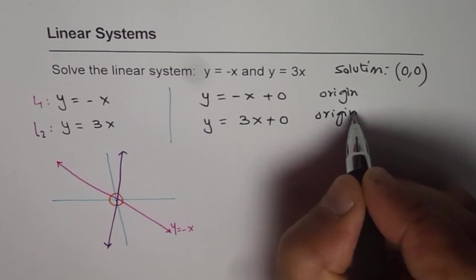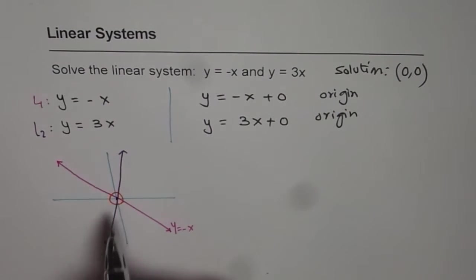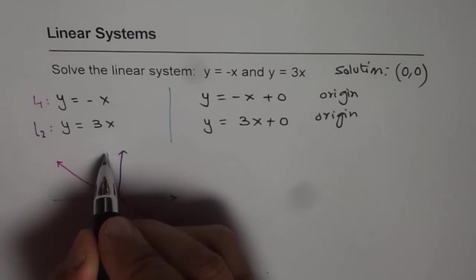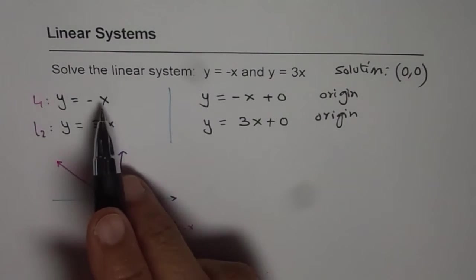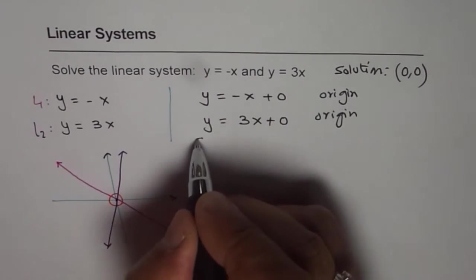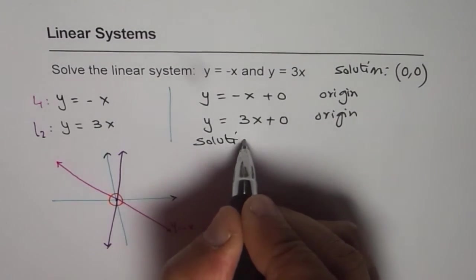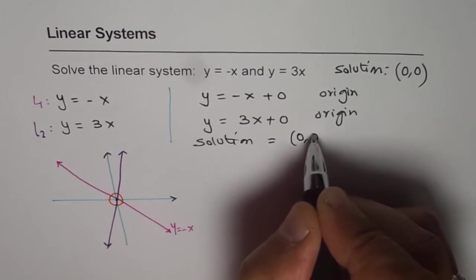So from here itself, it is very clear that both the lines pass through origin and therefore the solution for the system is a common point between these two which is origin. And so you get solution equals to a point which is origin (0,0).